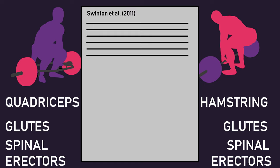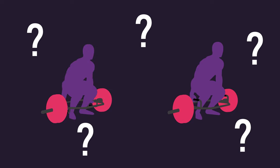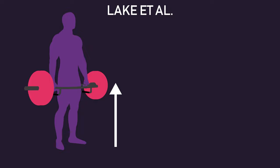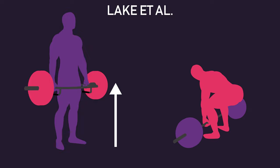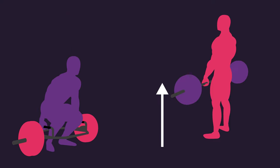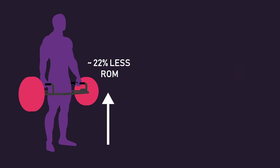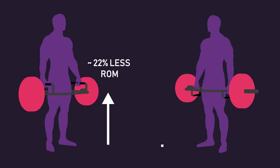Now, the data from Swinton and colleagues, and all the logic that followed, was about the low-handle trap bar deadlift. Would all of these conclusions apply to the high-handle trap bar deadlift? Lake and colleagues demonstrated that when using the low-handles with the trap bar, the distance the bar travels — the overall range of motion — is near identical to the conventional deadlift. But when using the high-handles with the trap bar, Lockie and colleagues demonstrated that the distance the bar travels is around 22% less compared to the conventional deadlift. From this, we can deduce that the high-handle trap bar deadlift involves roughly 22% less range of motion compared to the low-handle trap bar deadlift.